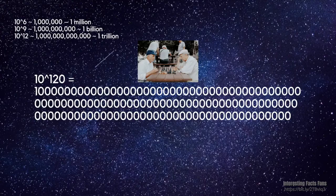Let's think about it for a moment. 10 to the power of 6 is a million and has six zeros. 10 to the power of 9 is a billion and has nine zeros. 10 to the power of 12 is a trillion and has 12 zeros. Now, 10 to the power of 120 has an astonishing 120 zeros.